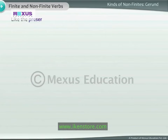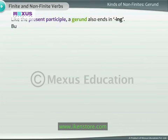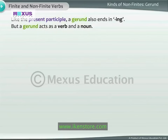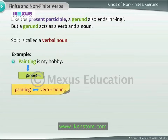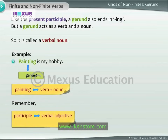Like the present participle, a gerund also ends in '-ing.' But a gerund acts as a verb and a noun, so it is called a verbal noun. For example, 'Painting is my hobby.' In this sentence, 'painting' is a gerund — it acts both as a verb and a noun. Remember that the participle and the gerund are different: the participle is a verbal adjective, while the gerund is a verbal noun.